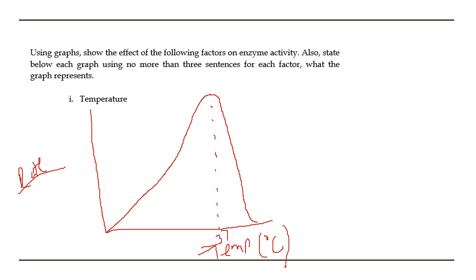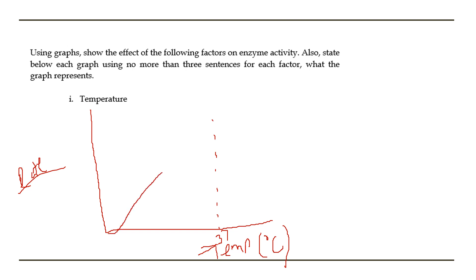Beyond 37 degrees, a lot of enzymes get denatured and so they are unable to function. Rather than putting the exact number, you can just label it as 'optimum temperature.' Remember to label your axes — this is the rate of reaction, and this would be temperature.